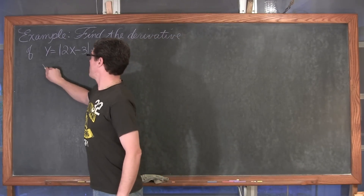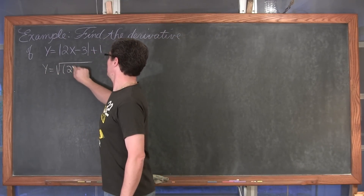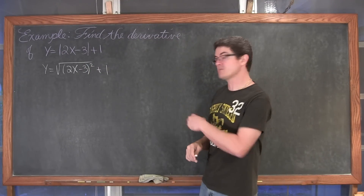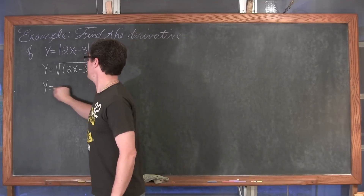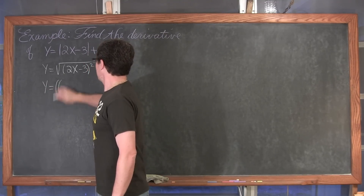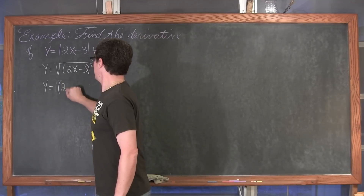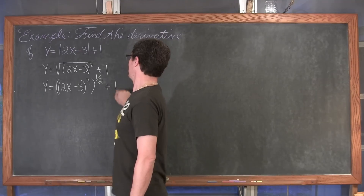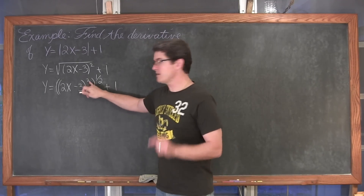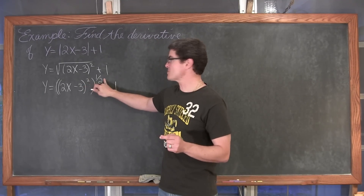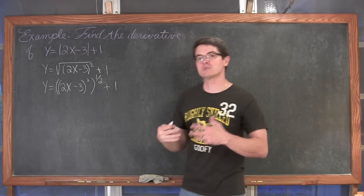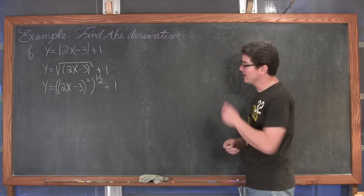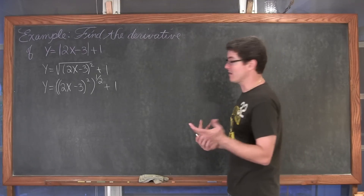We are going to write this as y equals the square root of 2x minus 3, squared, plus 1. Then we rewrite that radical as a rational exponent: y equals 2x minus 3, squared, raised to the one-half power, plus 1. Now I am not going to take the exponent of 2 and this exponent of one-half and apply the power-to-power rule to get two over two equals one, because that would just let the power and radical cancel out and defeat the purpose of this example.